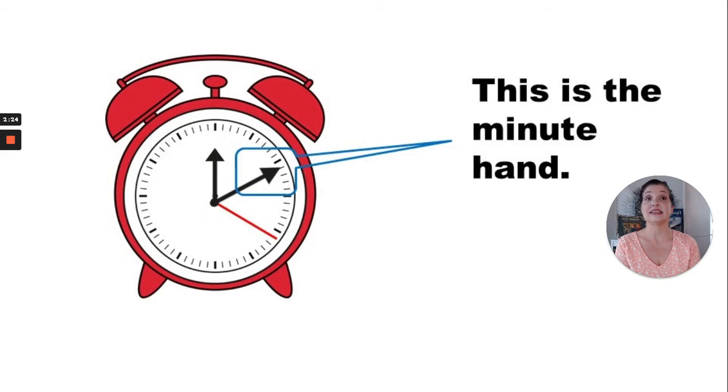There are 60 seconds in one hour. This is the minute hand. What do you notice about the minute hand? Do you see that it's black? Do you notice that it's not the longest hand, but it's not the shortest hand either?